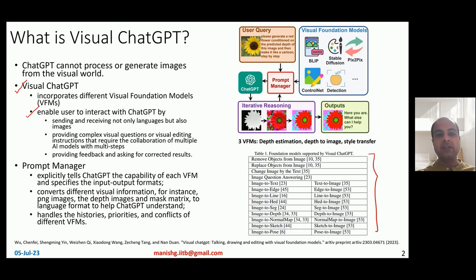Visual ChatGPT enables users to perform various actions on images while interacting with ChatGPT by sending and receiving not just language text, but also images. It allows users to provide complex visual questions or visual editing commands that require collaboration of multiple AI-based visual models.